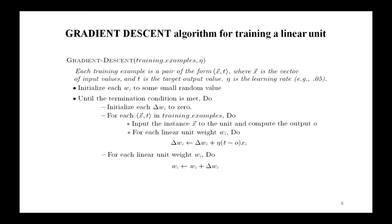Next comes the important algorithm: gradient descent for training a linear unit. You have to remember the different steps of this algorithm. The inputs to the algorithm are: training examples and eta, the learning rate. Each training example is a pair of the form (x-vector, t), where x-vector is the vector of input values and t is the target output value. Eta is the learning rate, which can be assigned a value like 0.07.